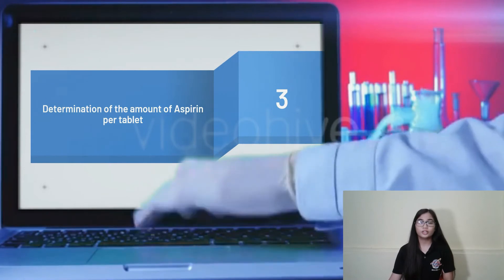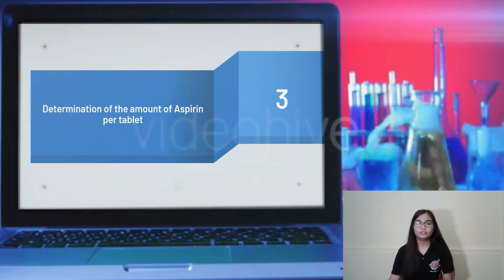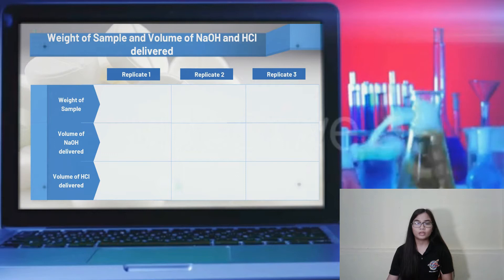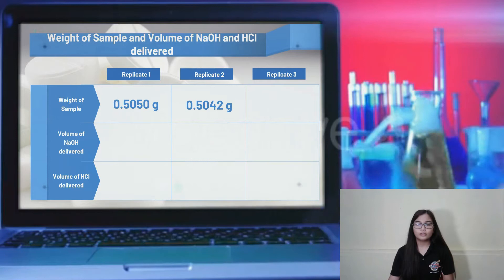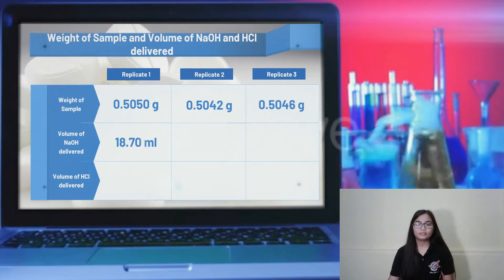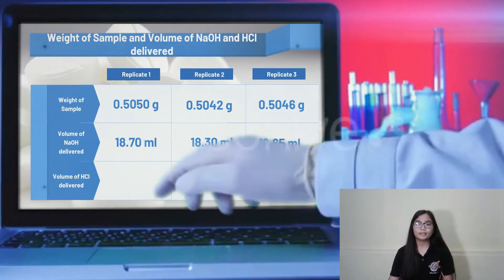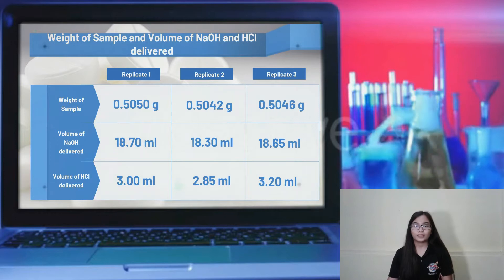For the results and discussion, the data gathered to determine the amount of aspirin per tablet includes the weight of sample, the volume of sodium hydroxide delivered, and the volume of hydrochloric acid delivered. For replicate 1, the sample weight is 0.5050 grams; replicate 2, 0.5042 grams; and replicate 3, 0.5046 grams. The volume of NaOH delivered was 18.70 mL, 18.30 mL, and 18.65 mL for replicates 1, 2, and 3 respectively. The volume of HCl delivered was 3.00 mL, 2.85 mL, and 3.20 mL for replicates 1, 2, and 3 respectively.